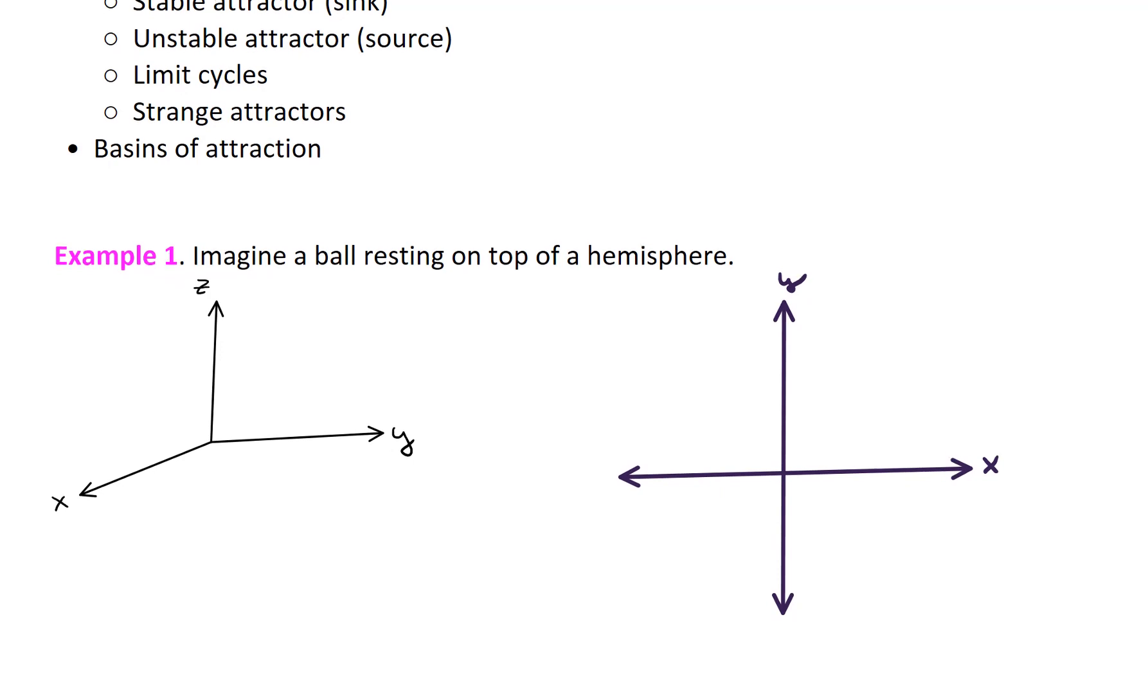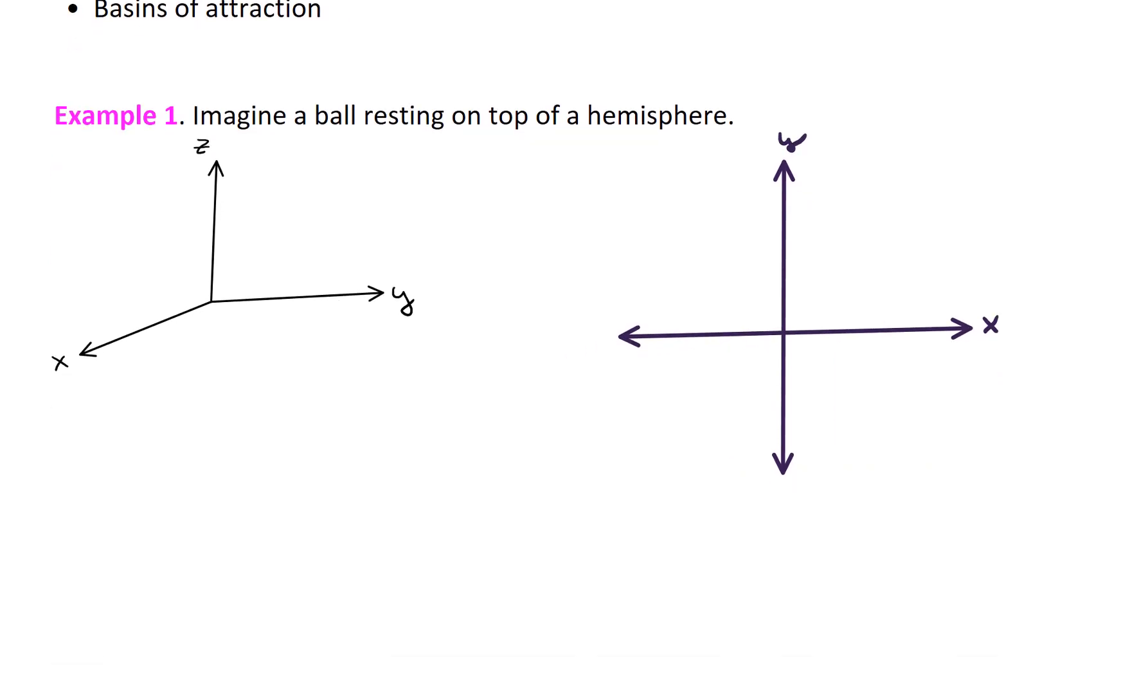Okay, so let's take a look at an example. For the first example, I'd like you to imagine a ball resting on top of a hemisphere. Or maybe a ball resting on top of a hill. So let me try to draw a visualization. So here's a hill or a dome or a hemisphere. Okay, so that's a solid sort of object. And we've got a ball resting right on the top. Alright, so that is an equilibrium point. But this is an unstable equilibrium.